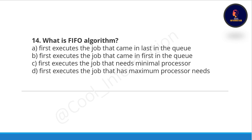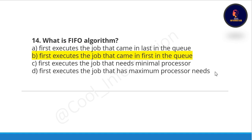Question fourteen: what is the FIFO algorithm? Option A: first executes the job that came in last in the queue, option B: first executes the job that came in first in the queue, option C: first executes the job that needs minimal processing, option D: first executes the job that has minimum process needs. The correct option is option B: first executes the job that came in first in the queue.